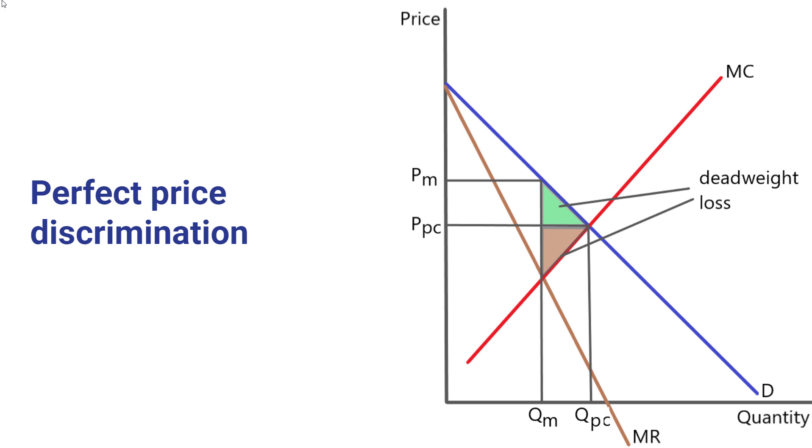So there's someone at the top left who would pay a very high price. The next person would only buy the good if the price is a little lower and so forth. The firm is getting a different price for each customer. And in that case, the marginal revenue from selling one more unit is just equal to the price again. And when that occurs, the equilibrium for a perfectly price discriminating monopolist would be equivalent to the competitive equilibrium.